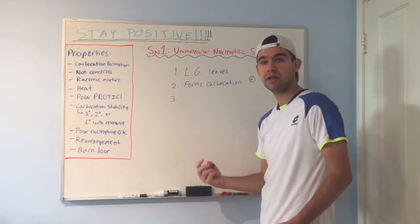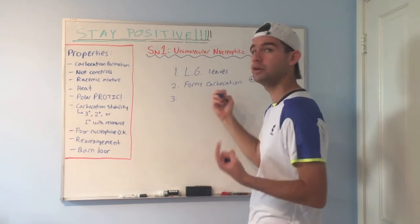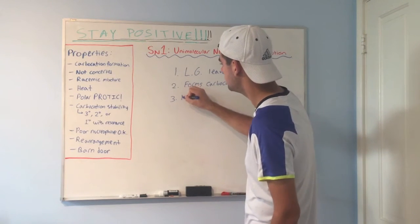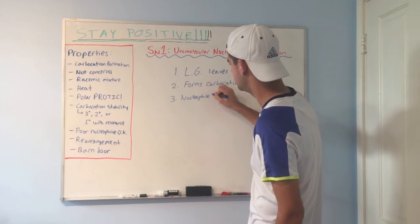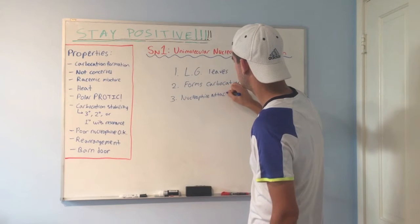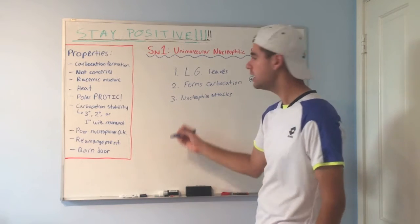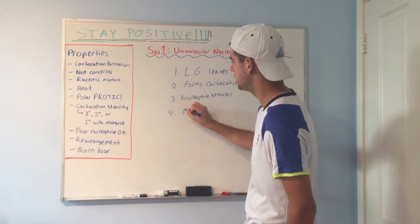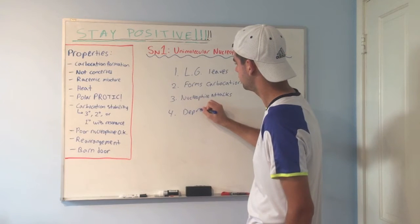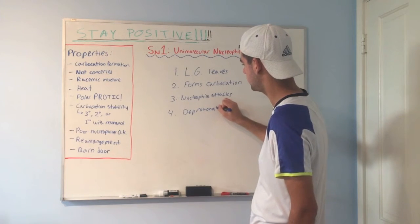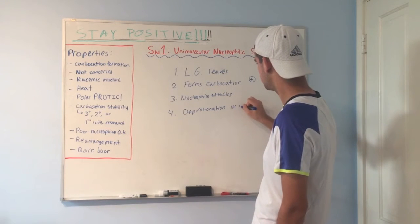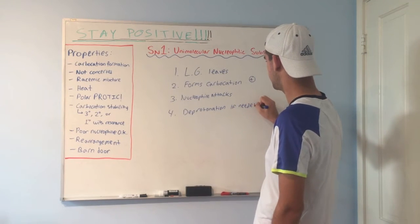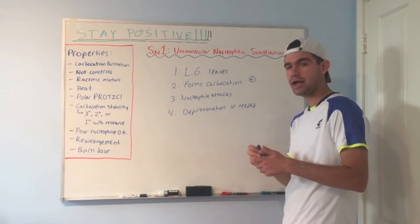That carbocation is extremely unstable, so it'll react immediately with a nucleophile, any nearby nucleophile. So the nucleophile attacks. And then finally, deprotonation if needed. We'll see how all of this comes into play later. So that's the general scheme of things for how SN1 reactions happen.